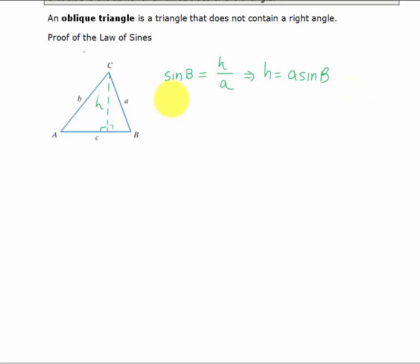We can also look at the sine of angle A. The sine of A equals the opposite over the hypotenuse, which is h over b. If I multiply both sides of this equation by b, I get h equals b sine A.